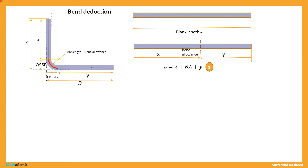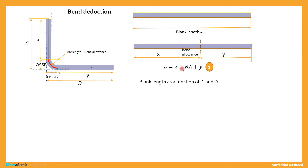The total blank length required to make this bend is equal to L, which equals X (leg length 1) plus bend allowance (the arc length shown in red) plus Y (leg length 2). So X plus BA plus Y gives us the total blank length in the unfolded view of this 90-degree bent sheet metal part. This is equation number 1: L = X + BA + Y, expressing blank length as a function of X, BA, and Y.